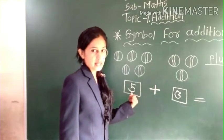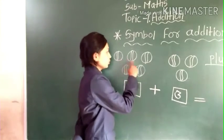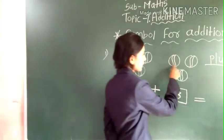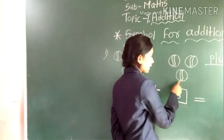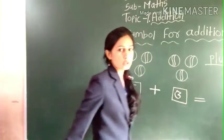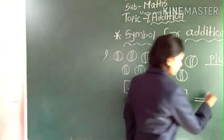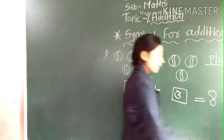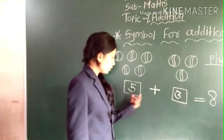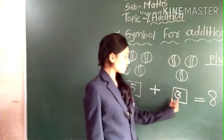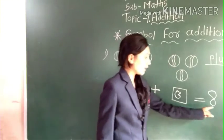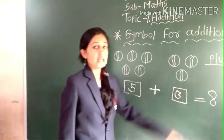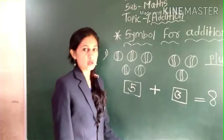Let's count: one, two, three, four, five, six, seven, eight. Total balls — eight balls. So five plus three gives us eight balls. Total balls — eight balls.